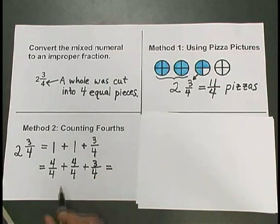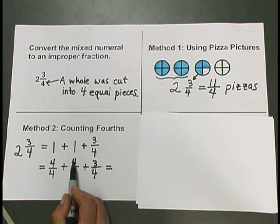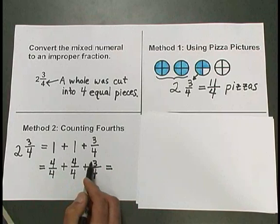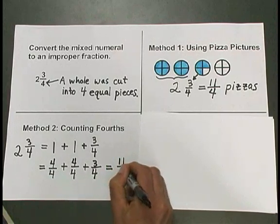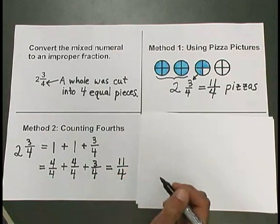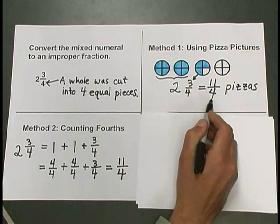All together, we have 4 plus 4 is 8 plus 3 more is 11 fourths. Just like we got with the pizza pictures.